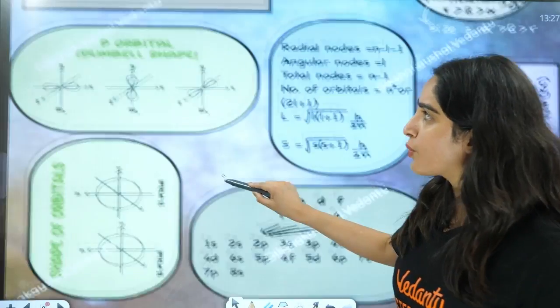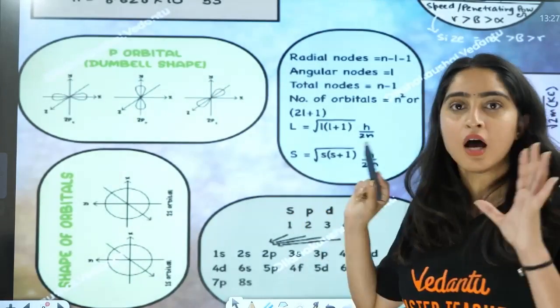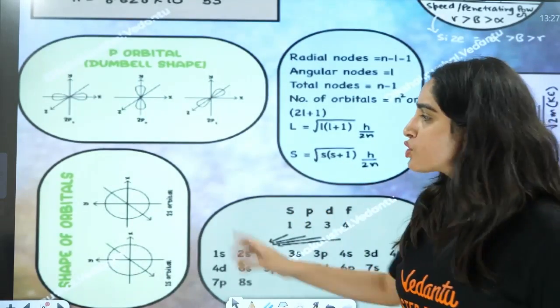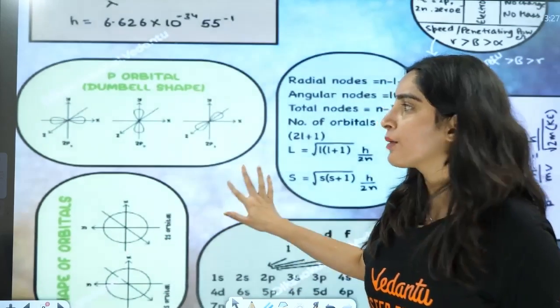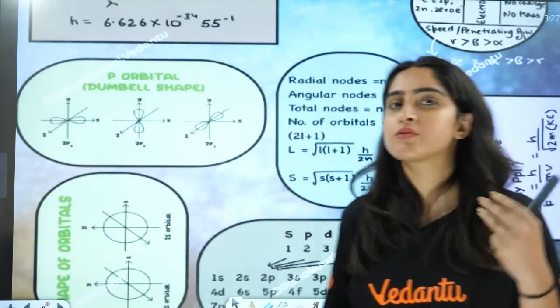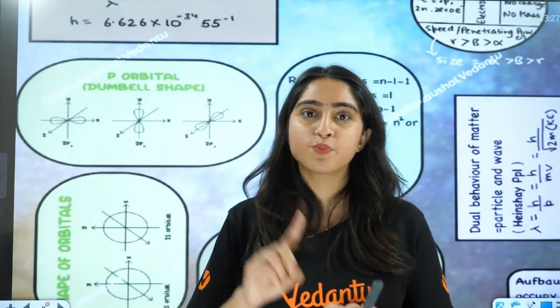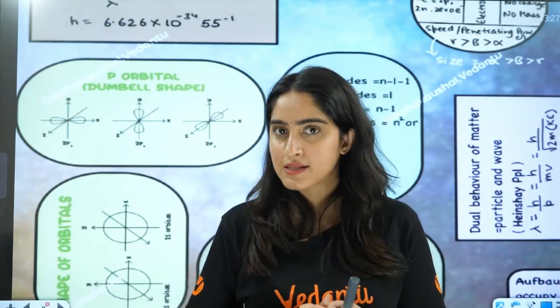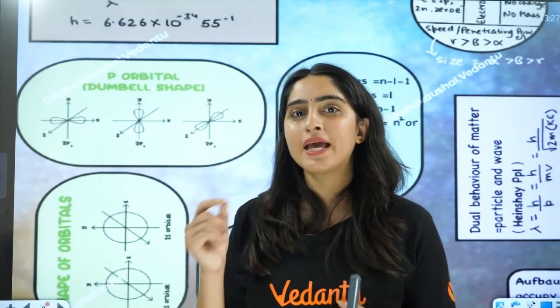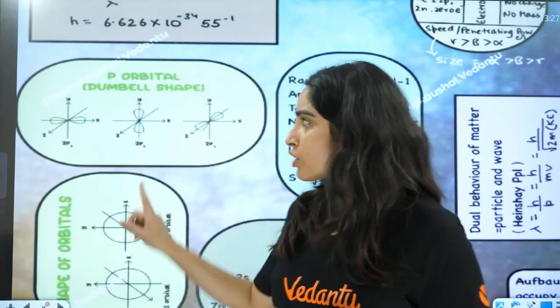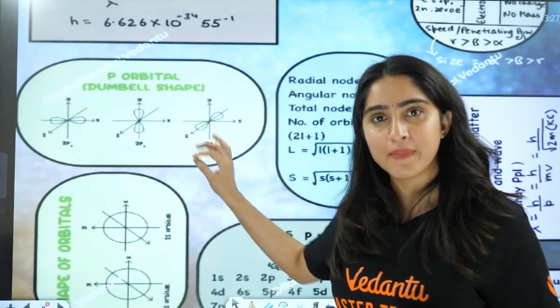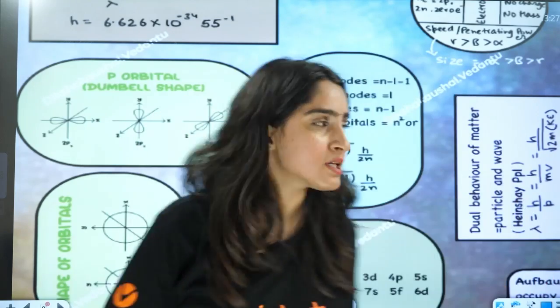S has a spherical shape. Talking about P, it has three orbitals: Px, Py, Pz, and it has a dumbbell shape.